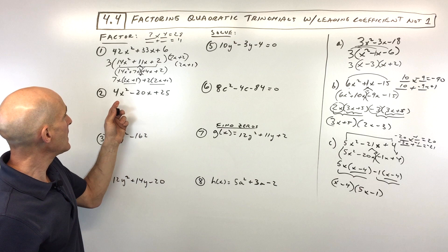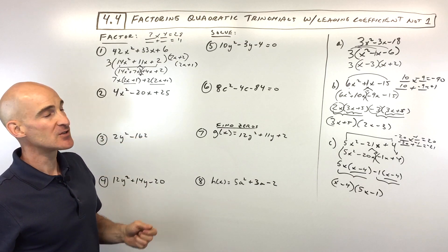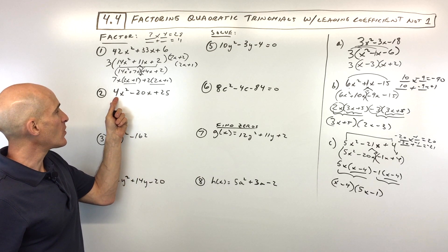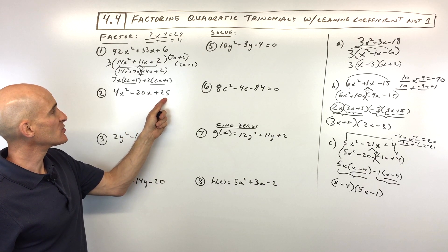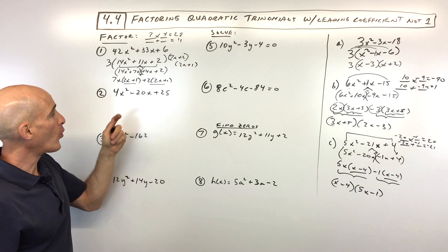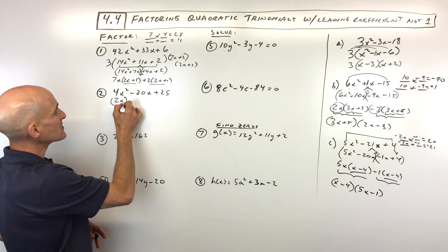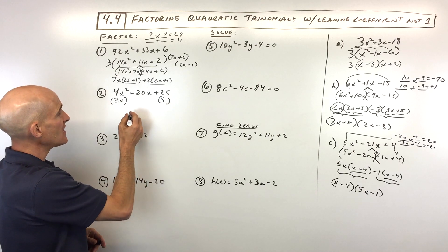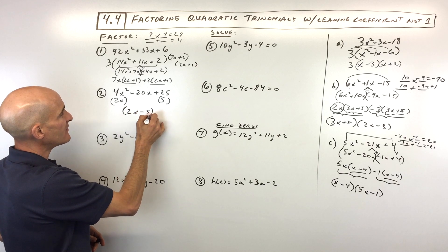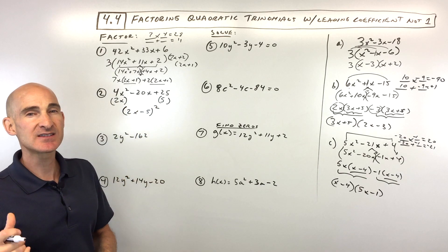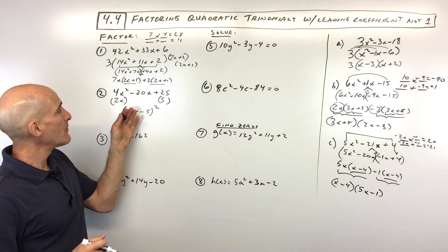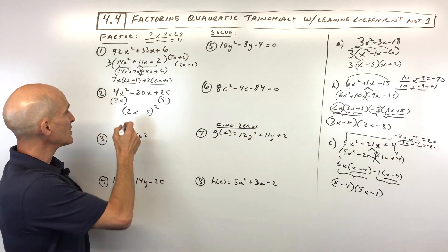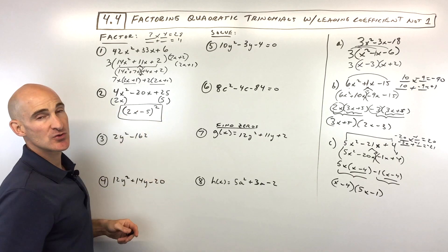Number 2: factor 4x squared minus 20x plus 25. One way is to do 4 times 25, which is 100, and find what multiplies to 100 but adds to negative 20. Or you can recognize this as a perfect square: 2x times 2x, 5 times 5, and 2x times 5 is 10x, doubled is 20x. So this factors to 2x minus 5, quantity squared — or 2x minus 5 times 2x minus 5.